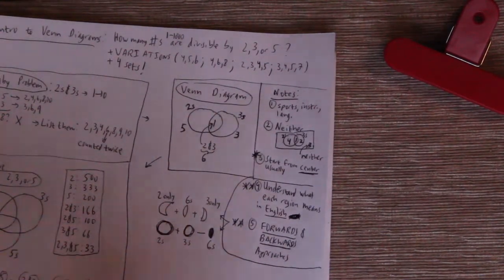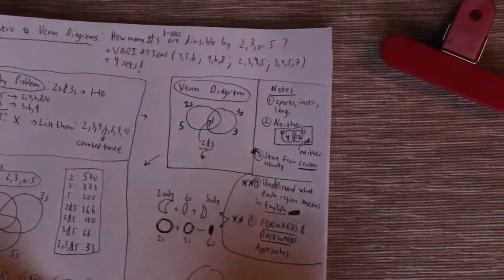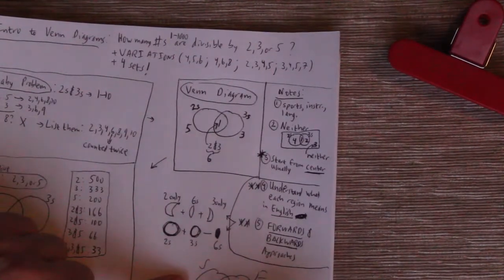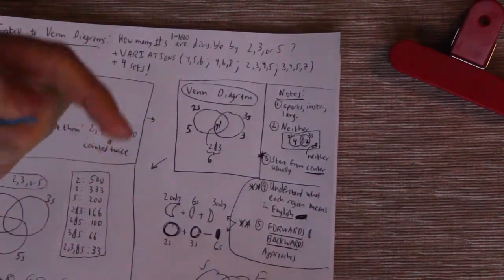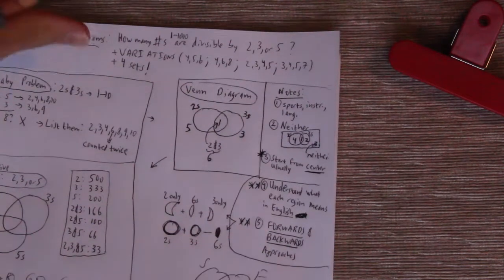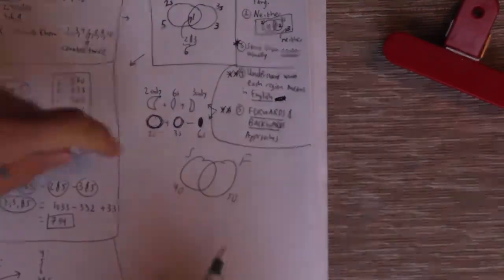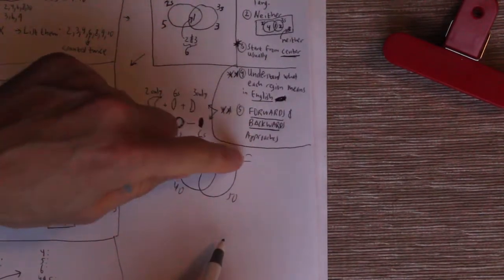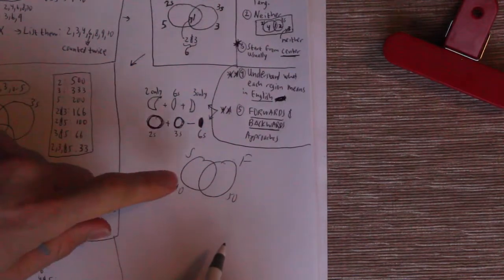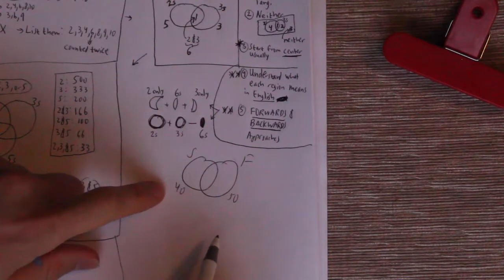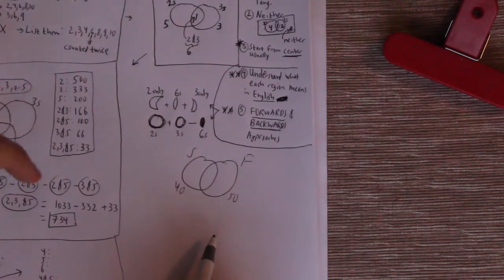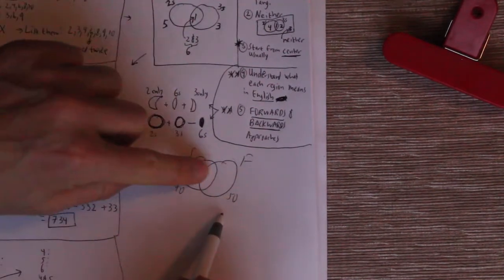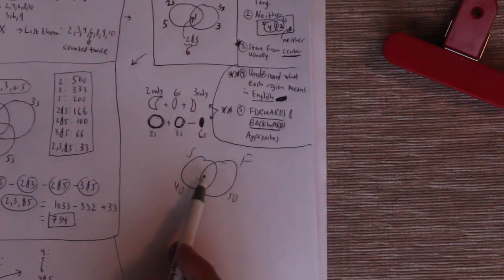Let me just throw in a quick little thing. Let's say this circle is Spanish, this circle is French, 40 students take Spanish, 50 students take French. The question might ask, what is the maximum number of students that take one of the two languages? And the answer would be 90, because you would just add 40 and 50, because in that case, you could just put zero over here. Maybe none of them take both.